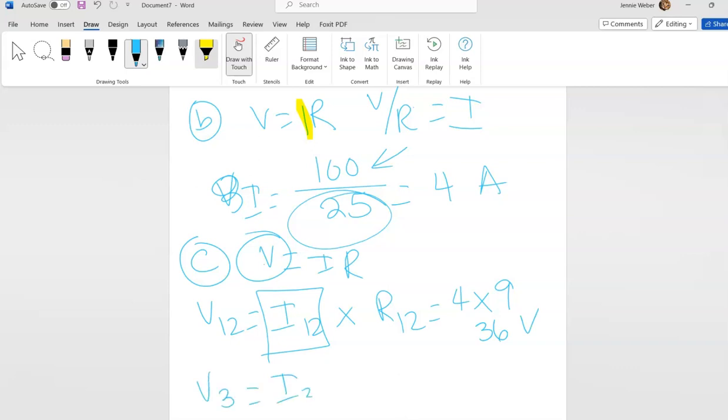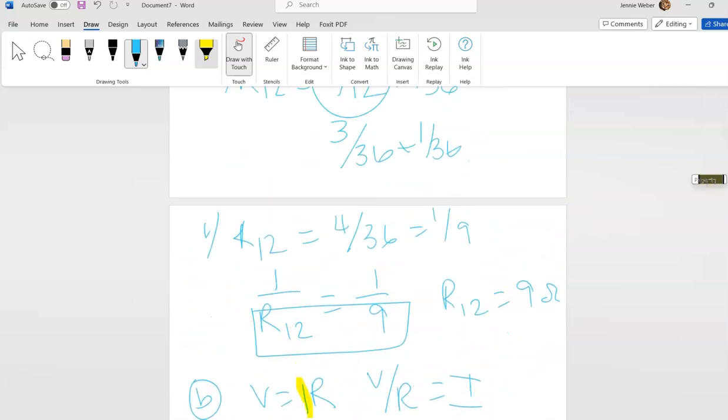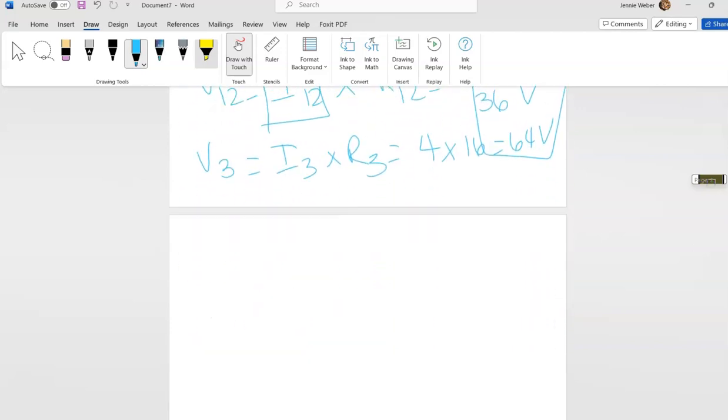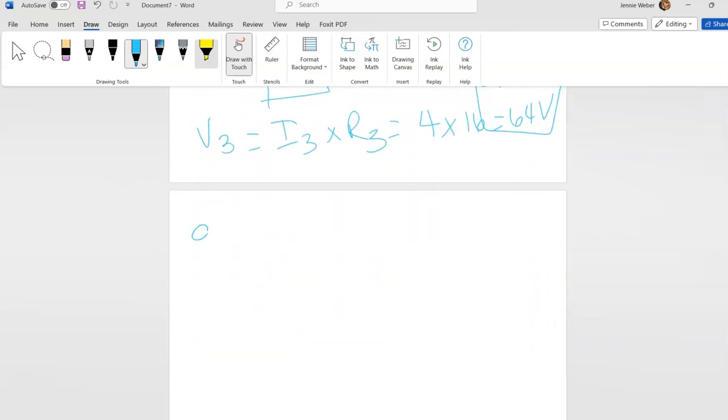So this is 36 volts. And then I'm going to do three, so this is I3 times R3 which is going to be 4 times 16 which is 64 volts. And you'll notice these equal 100 volts that's in my circuit. So that divvies out then.